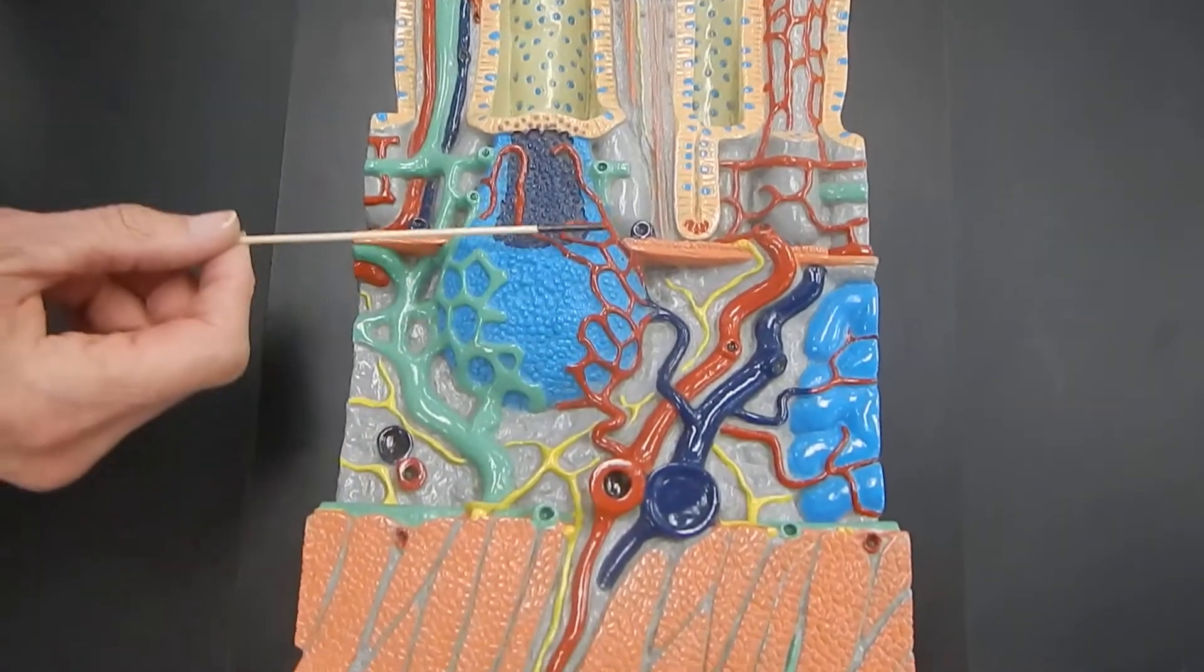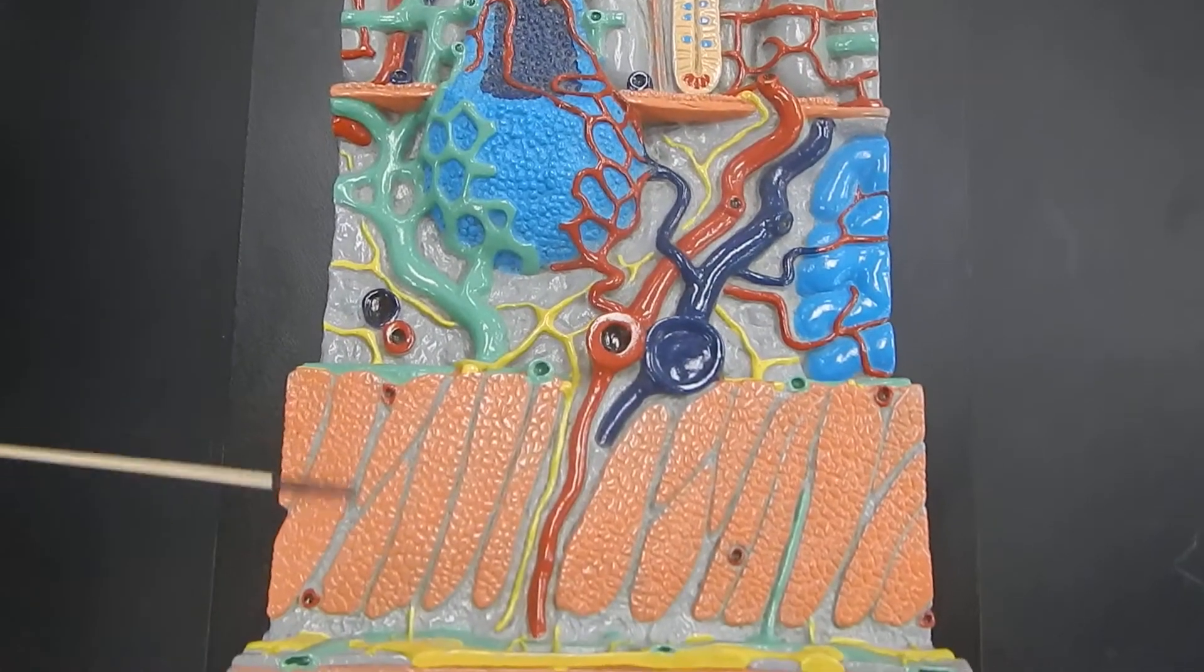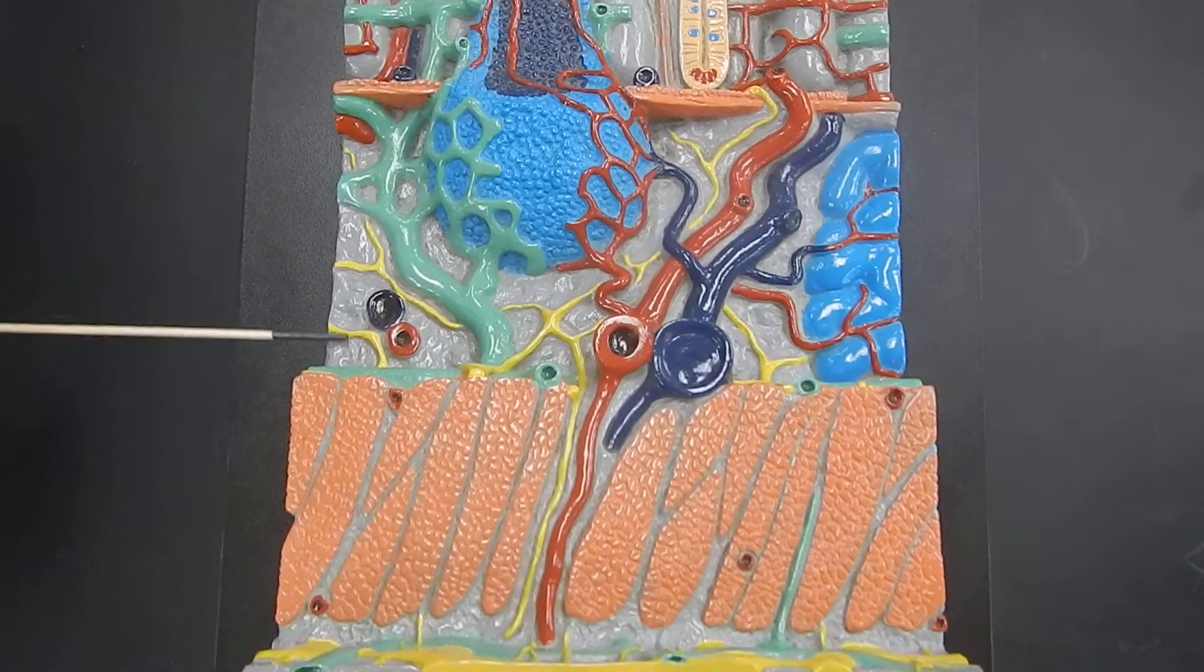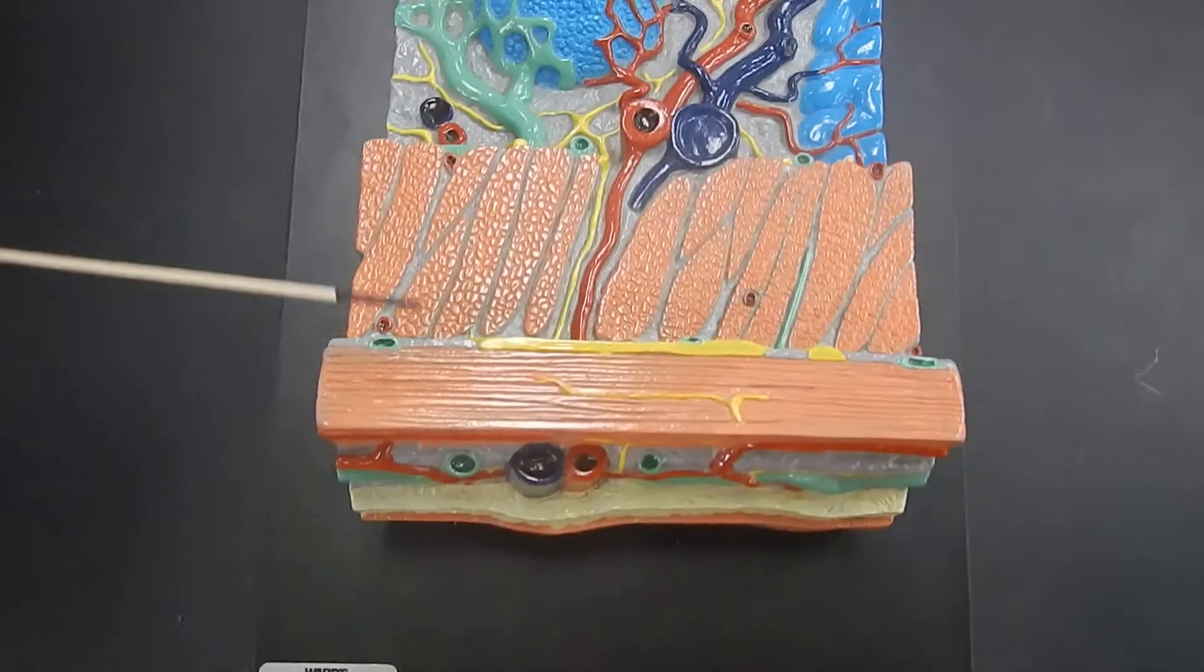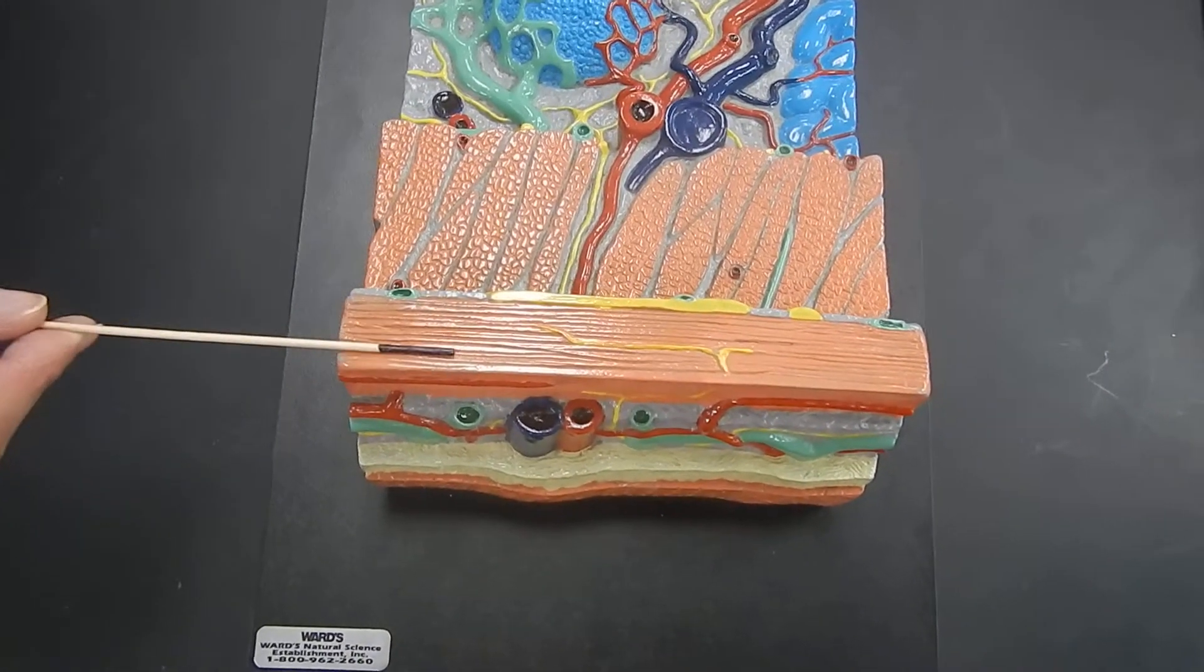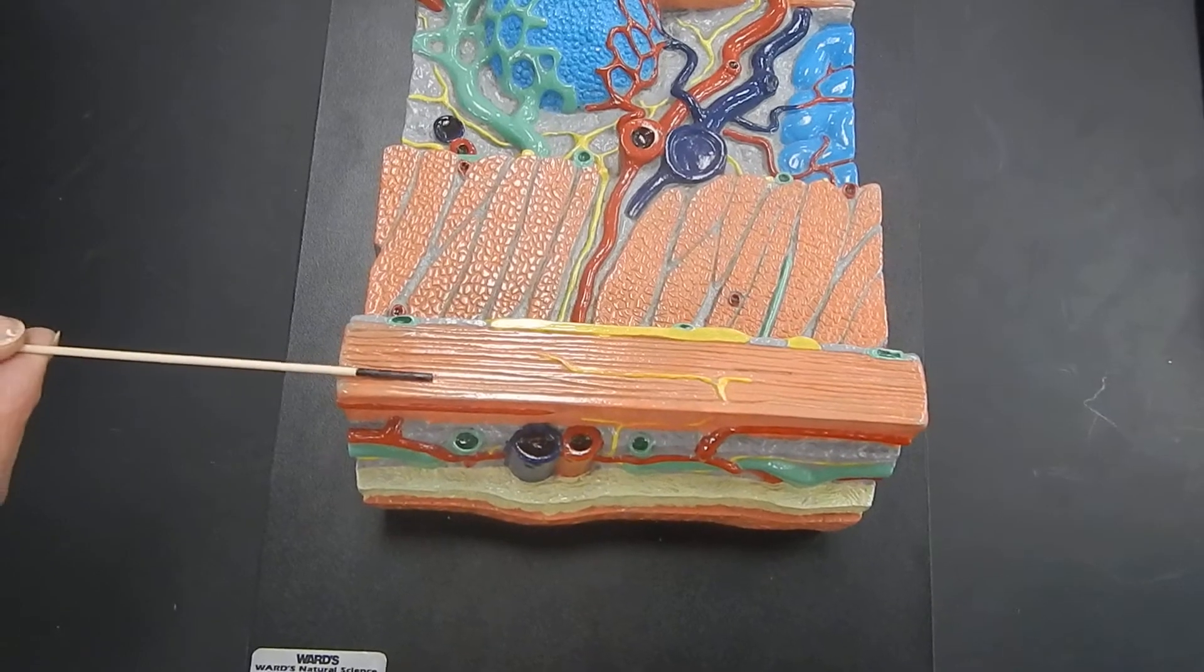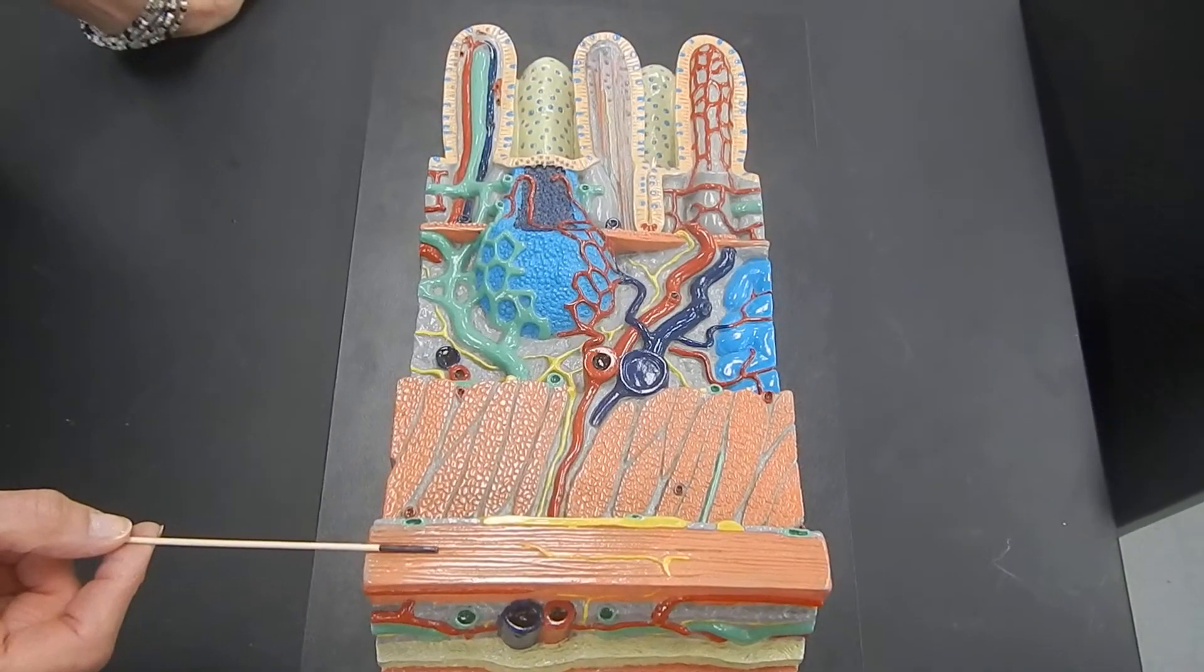Underneath the mucosa, between this muscle layer here and this thick muscle layer here, this area is called the submucosa. And these two layers of muscle here, together they make a layer called the muscularis. The two layers of muscle are the muscularis.